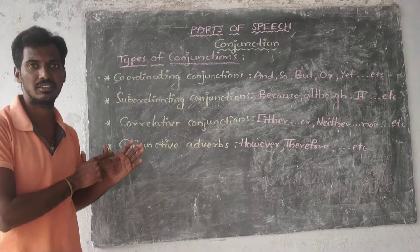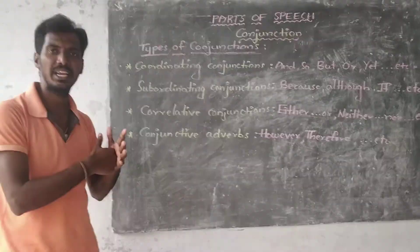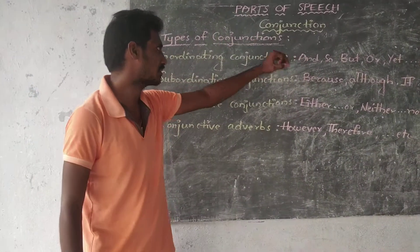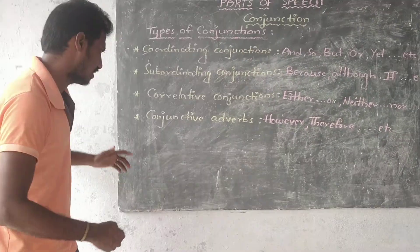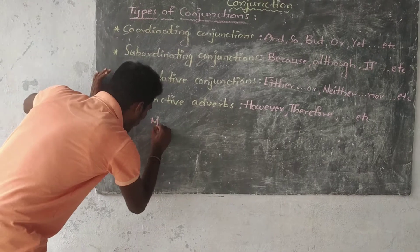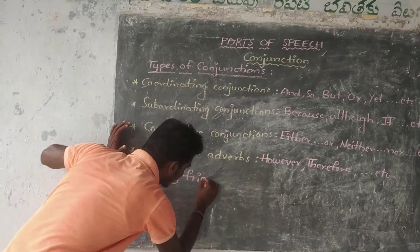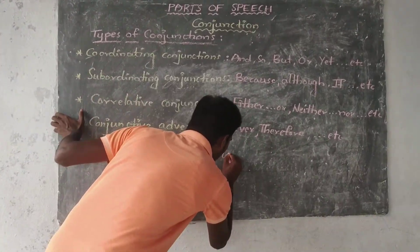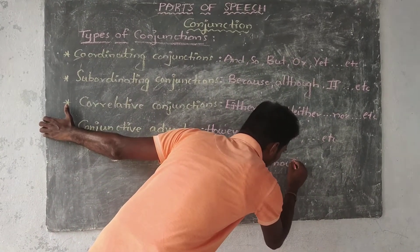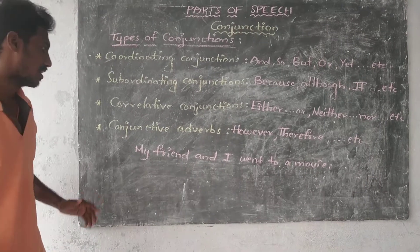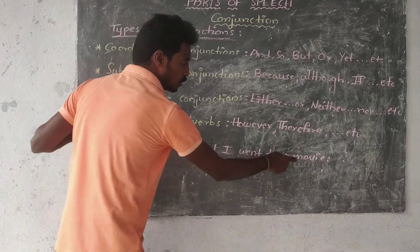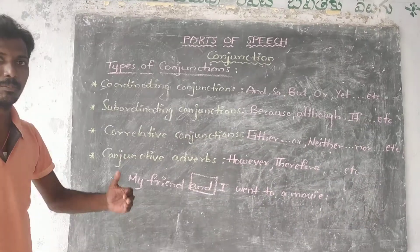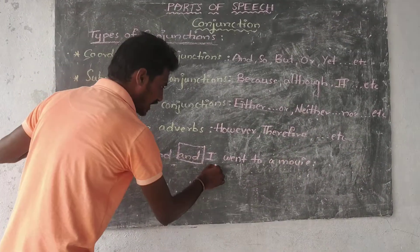I will write a sentence using the coordinating conjunction 'and'. For example: My friend and I went to a movie. I have used 'and' here to combine two words — my friend and I.